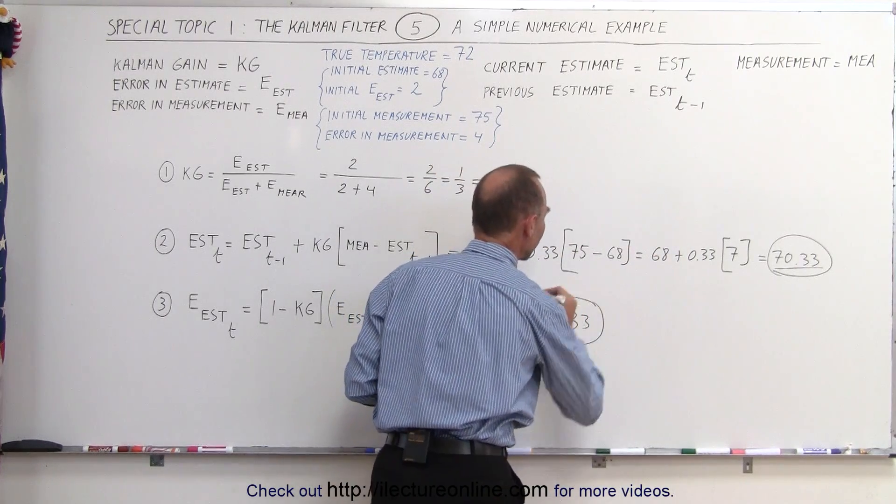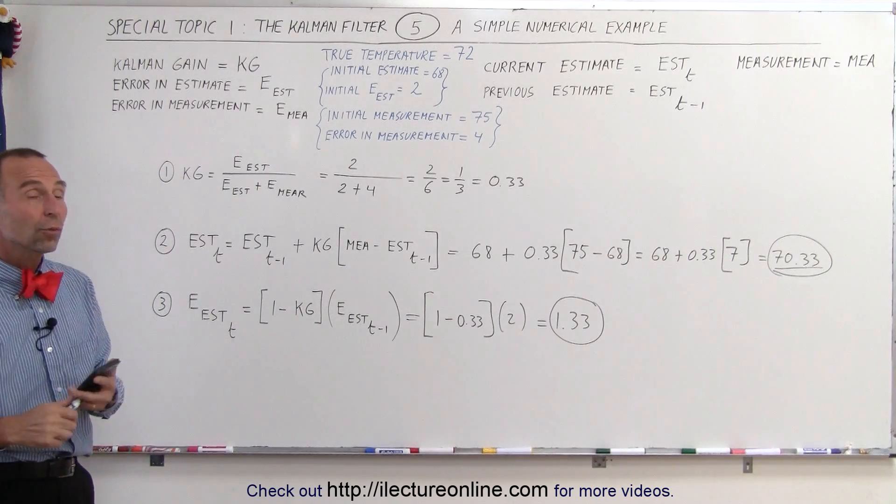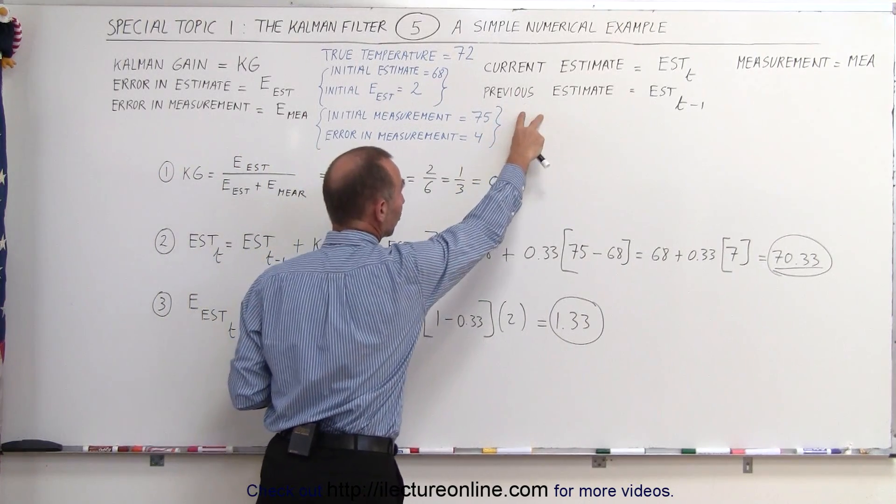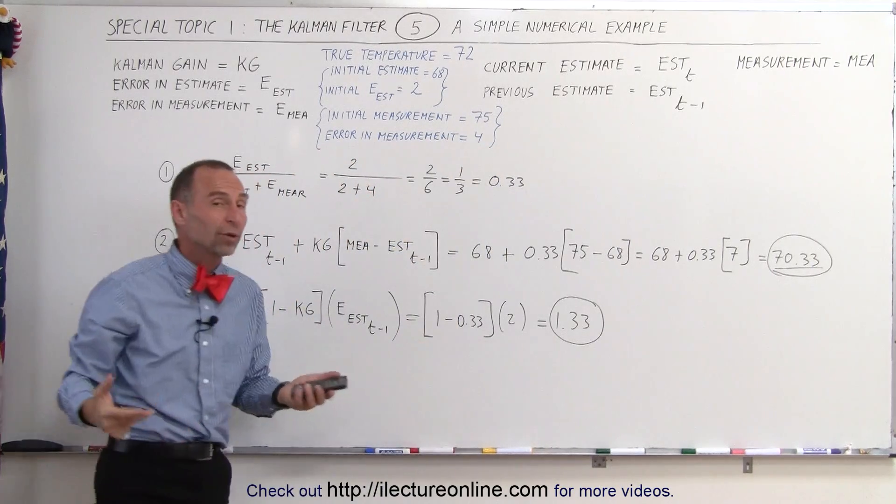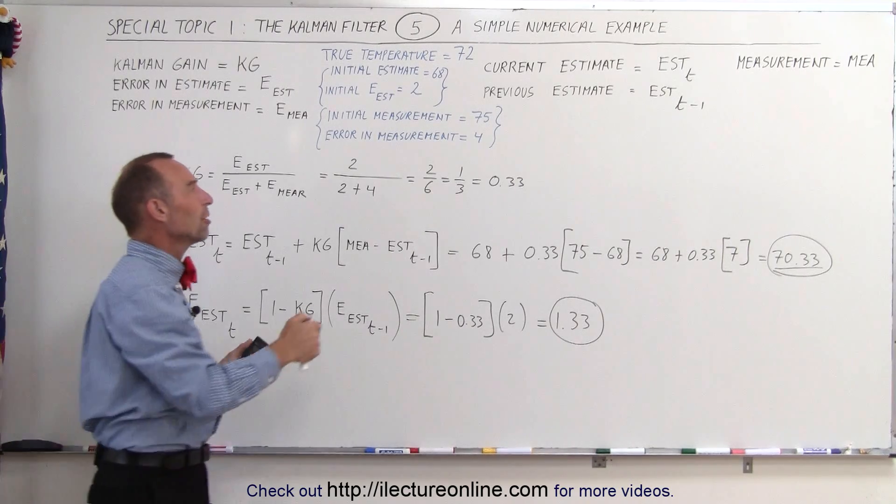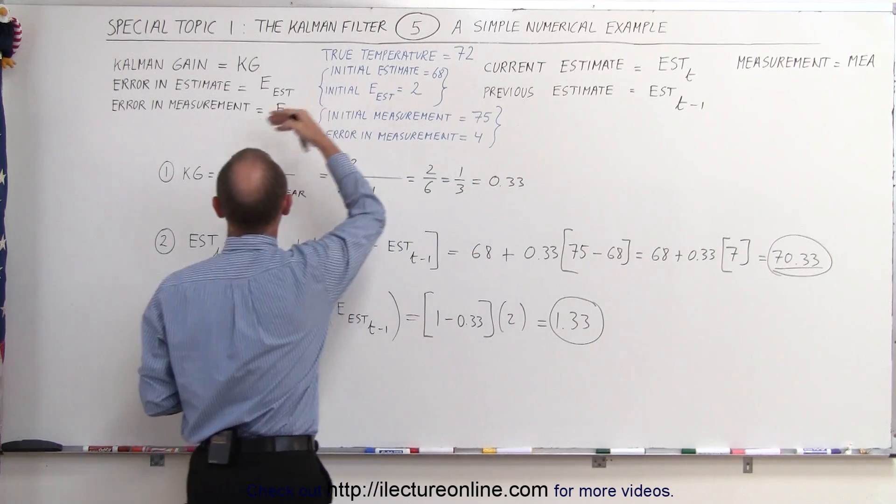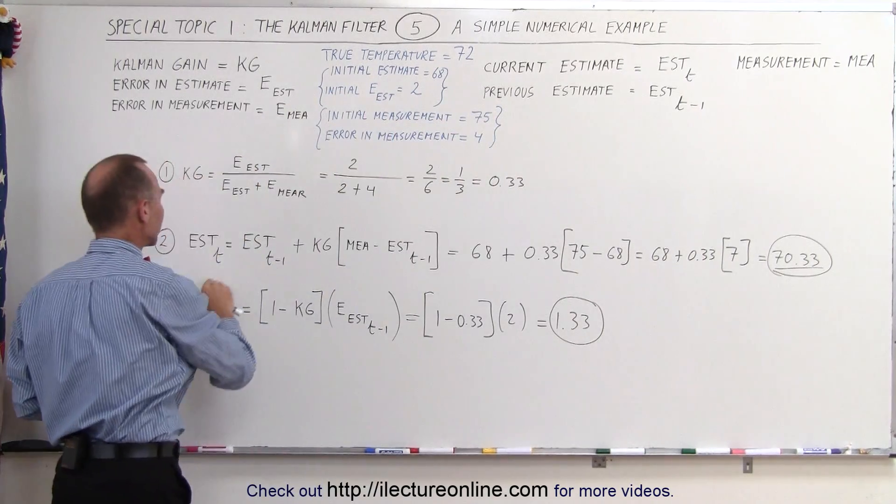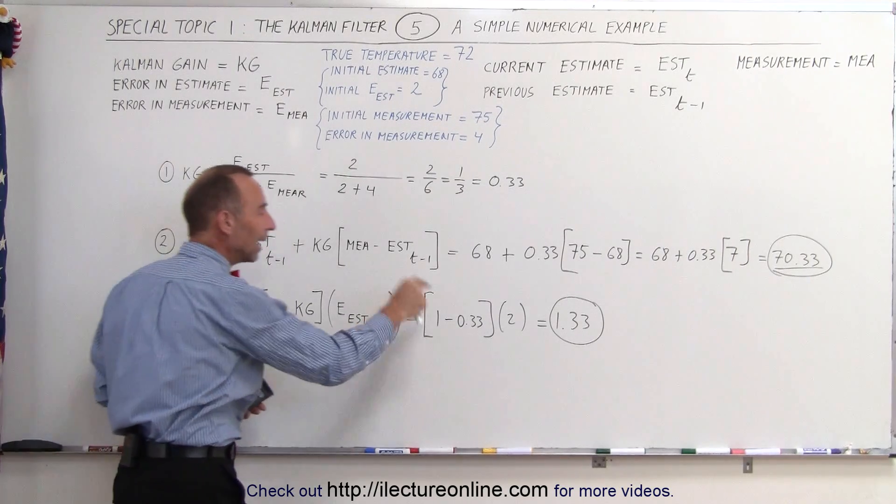And so we would then use the current estimate and the updated error to then go through a second iteration and do this again as soon as we get a new measured value. So the next thing we want to do is look for the next measured value, assuming that the error in the measurement will still be 4. The error usually doesn't change in the measurement unless the conditions change under which the measurement was taken. And so we would take a new measurement, we would then plug that into our Kalman gain equation, come up with a new Kalman gain, from that come up with a current estimate, an updated estimate, and from that update the error in the estimate.